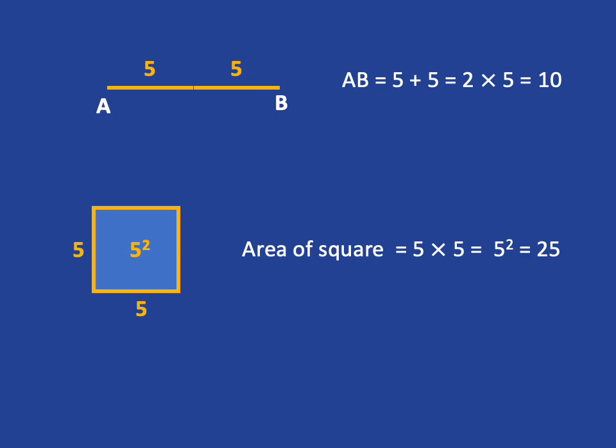5 plus 5 remains a length, and it's a length of 2 times 5, which is 10, whereas 5 times 5, 5 squared, is an area. And we're going to get the same story when we get to algebra.